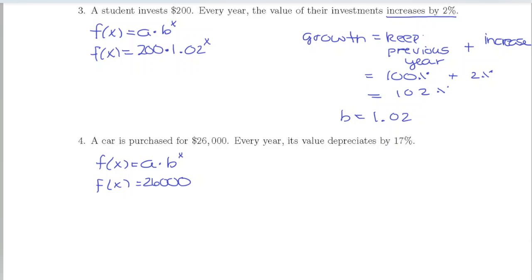Then let's think about our decay rate. It says it depreciates or goes down by 17%, so we know that this is going to be decay because the value is going down or depreciating.